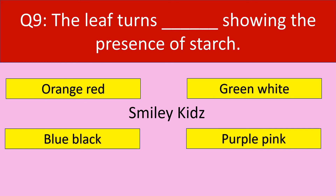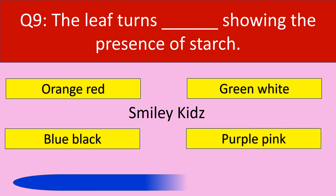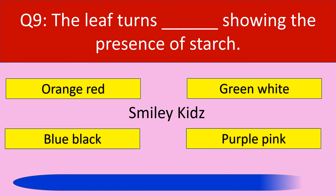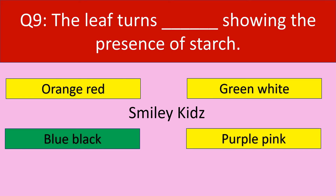Question number 9. The leaf turns — showing the presence of starch. Your options are orange, red, green, white, blue-black, purple, or pink. Your time starts now. The correct answer is blue-black. The leaf turns blue-black showing the presence of starch.